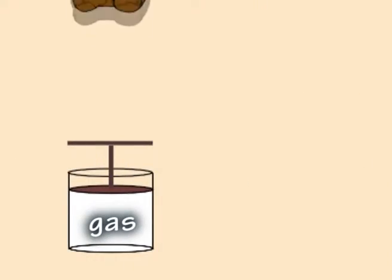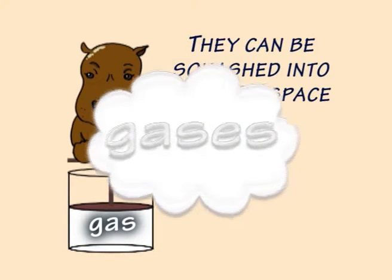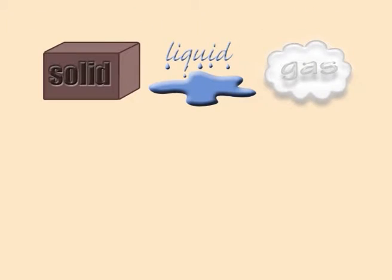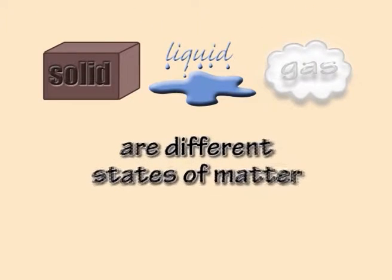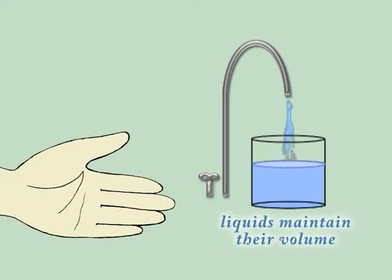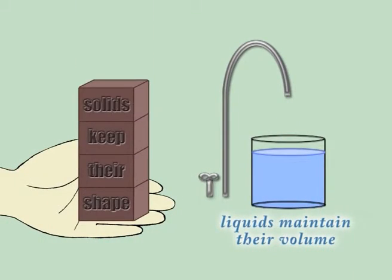They can be squashed into a smaller space, and spread out all over the place. Liquid and solid are different kinds of states. One maintains its volume and the other its shape.